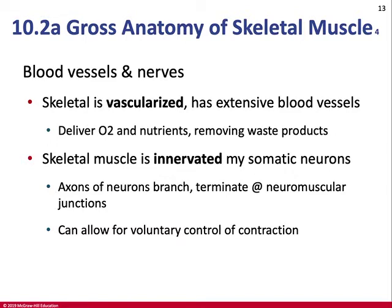Skeletal muscle is a vascular tissue — it needs a lot of oxygen and nutrients to function, so there are many blood vessels throughout. This also serves to remove waste products generated when muscle does its work. Skeletal muscle is innervated by the somatic motor division of the nervous system — an efferent (outgoing) division that carries voluntary commands to skeletal muscle targets. It's made of some of the fastest neurons in the body, sending electrical signals at about 250 miles per hour. Axons of the neurons branch and terminate at areas called neuromuscular junctions, allowing voluntary control of contraction.